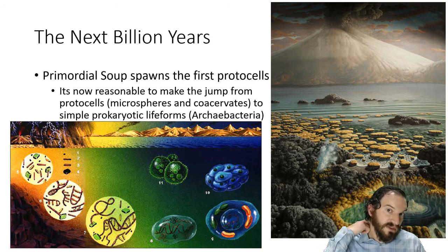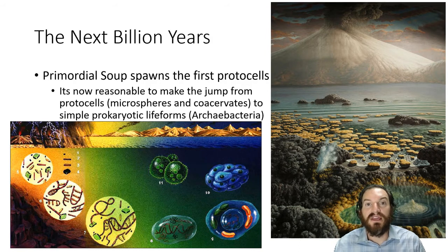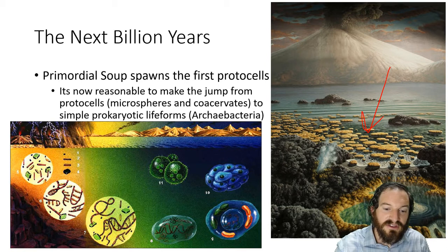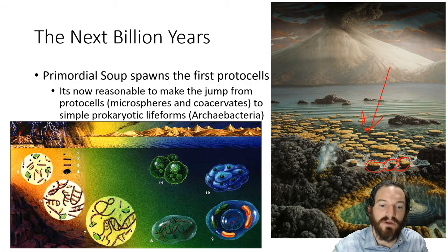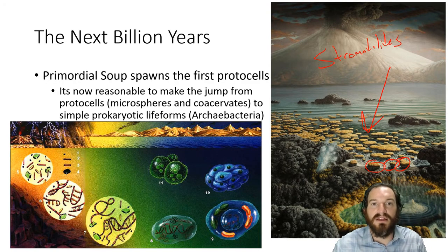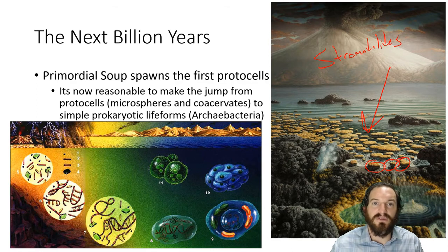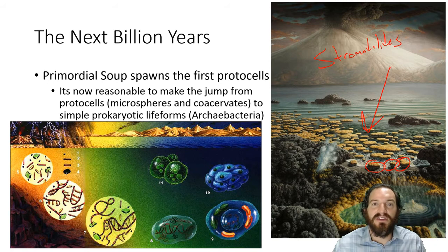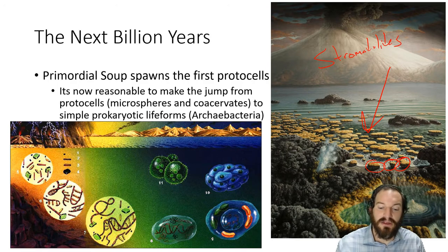What starts to happen is you eventually get simple archaea bacteria life forms — sometimes called colonial organisms because they lived in colonies. In this picture you can see these rock-like structures called stromatolites. Their fossilized remains can be found today, especially in places like Australia. They formed in very shallow oceans — colonial organisms that were able to survive off the nutrients in the primordial soup waters.